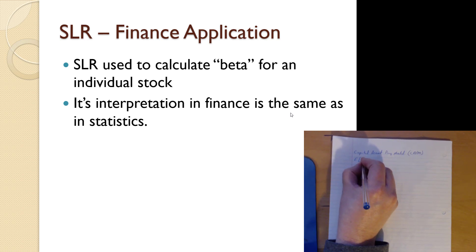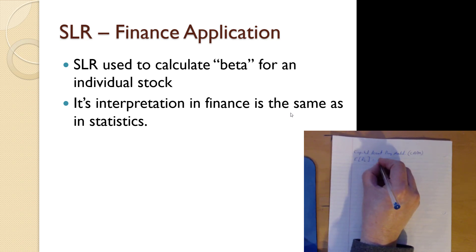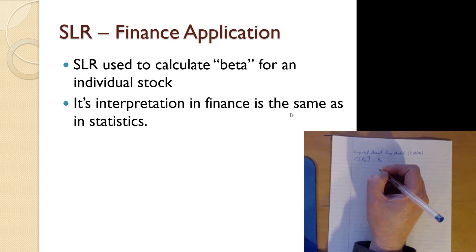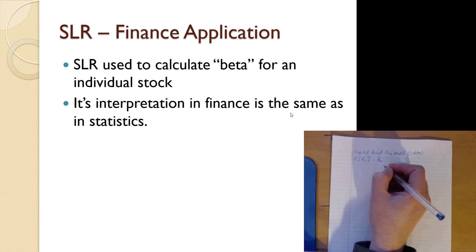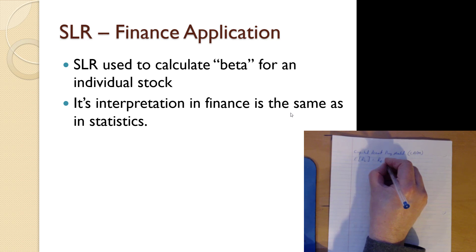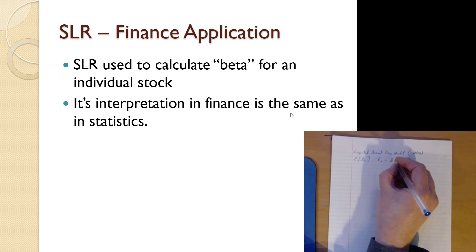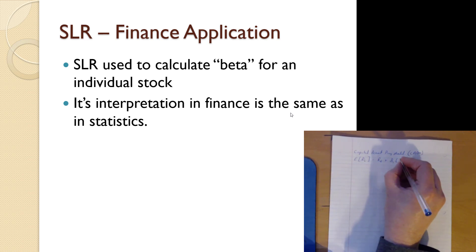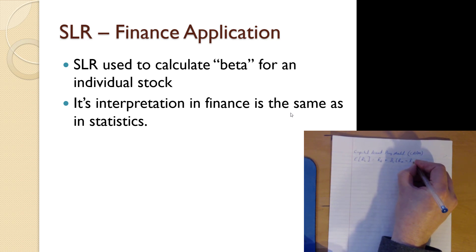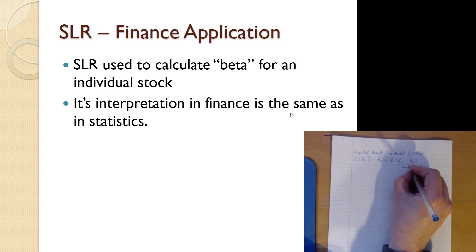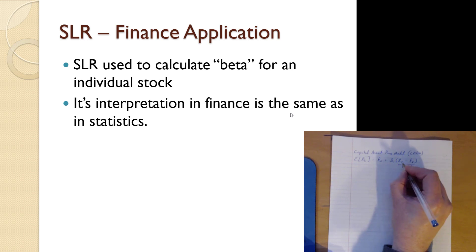What we're looking at is the expected return for a particular stock as a function of the risk-free return. Risk-free return means something you get from government bonds — usually a longer-term government bond, often a 10-year treasury of some sort — plus some beta, which we know to be the slope, and then what we call a risk premium: the return from the market minus the risk-free rate.